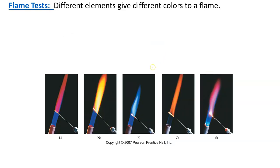We can also identify elements using a flame test. Specific elements produce specific colors in a flame. When you see a reddish color, that's going to be lithium. They take a sample of the element, put it onto a nichrome wire, put it into a Bunsen burner, and you see colors — that color helps you identify the element. Potassium produces a bluish color, calcium orangish, and strontium looks like violet or magenta. It's not as accurate as the emission spectrum, but it's another option for identifying elements.